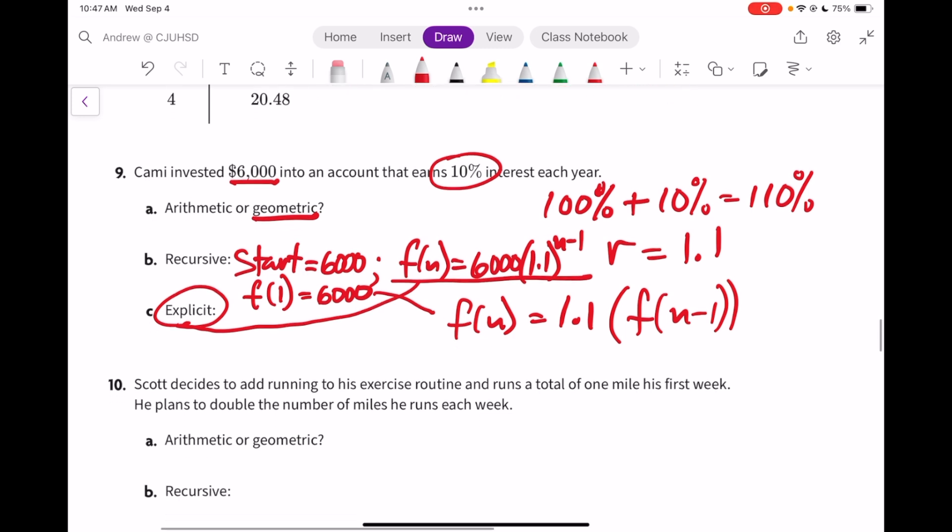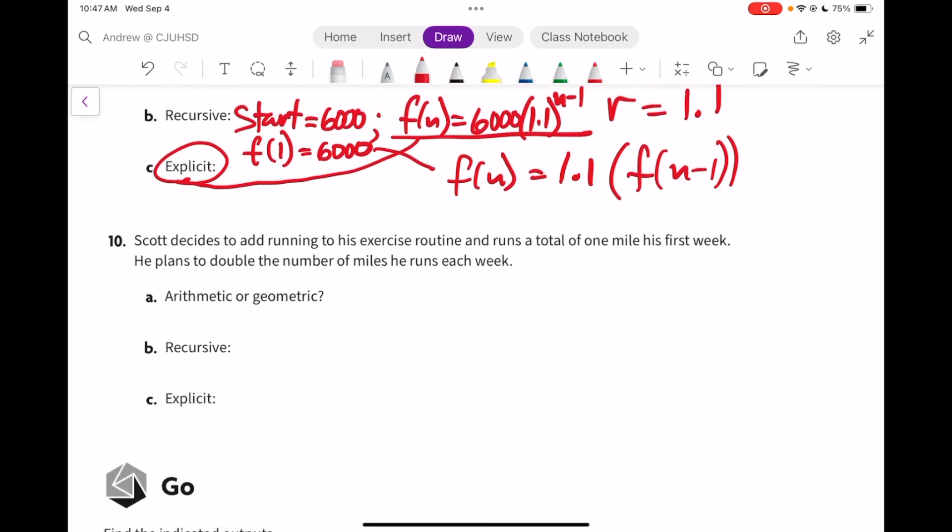And then finally Scott, he's going to run a total of 1 mile his first week. That's his beginning value. And then he's going to double, so that doubling means that the ratio is 2. And this would be his f(1). It is geometric.